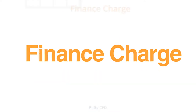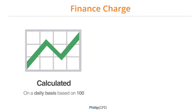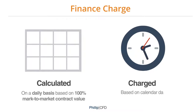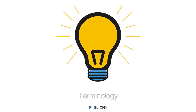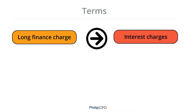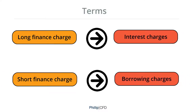Finance Charge is calculated on a daily basis based on 100% mark-to-market contract value. We will take the closing price of the contract on each day for the calculation, and it is charged based on calendar day. Long Finance Charge will be termed as Interest Charge, while Short Finance Charge will be termed as Borrowing Charge.